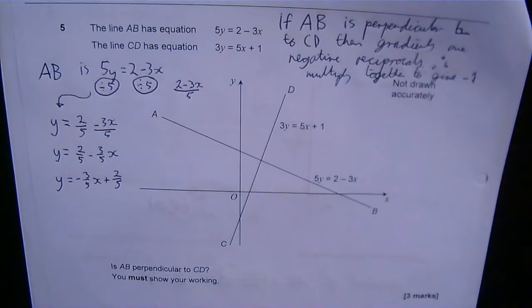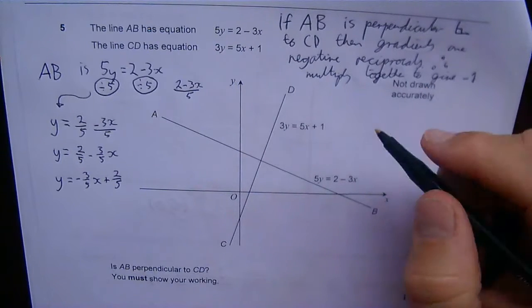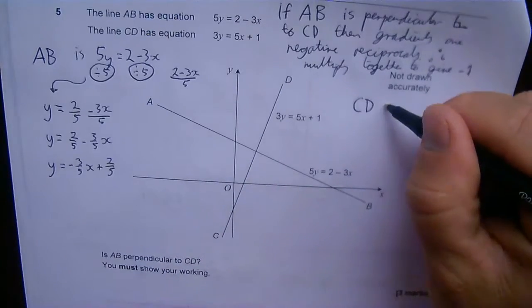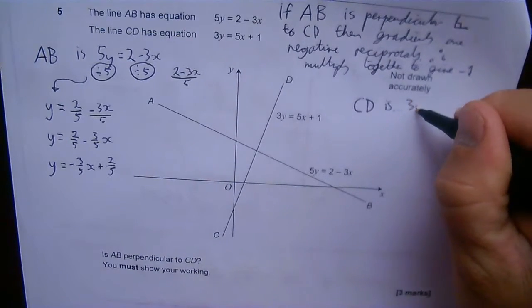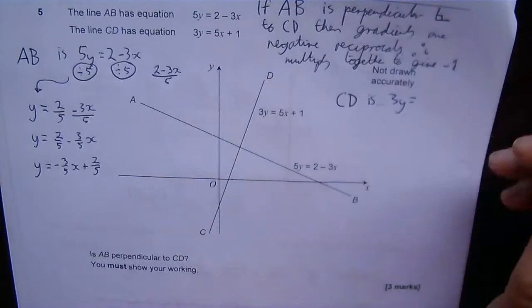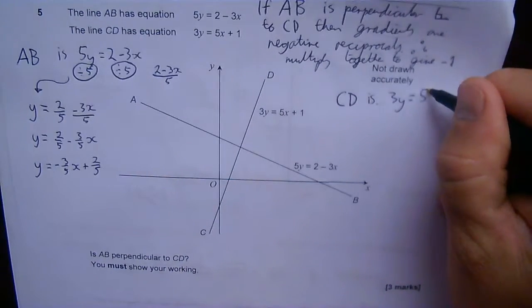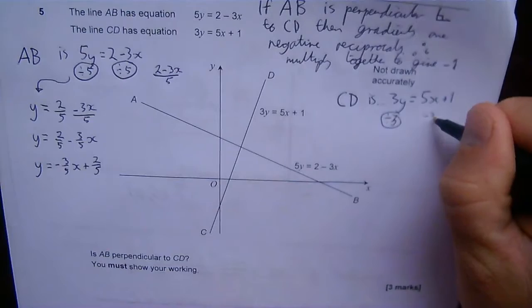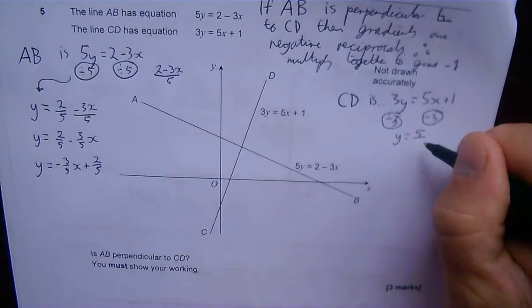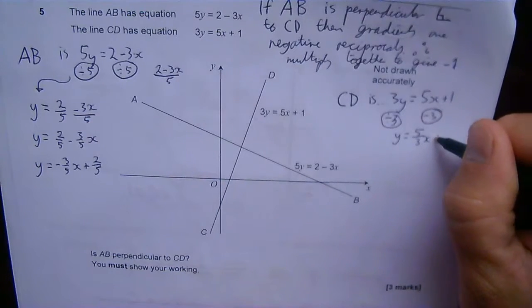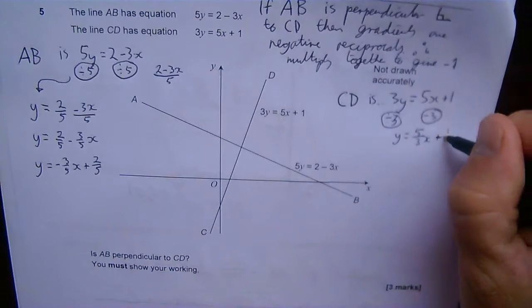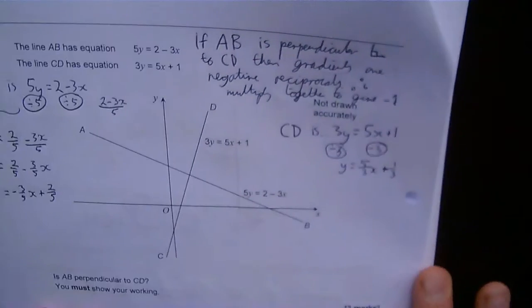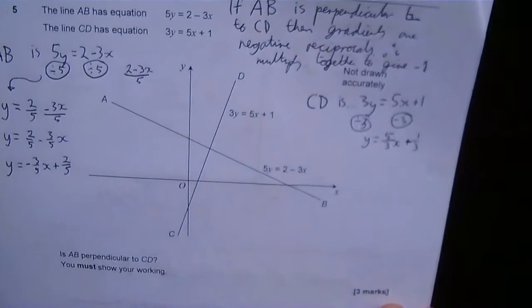Now looking at CD: CD is 3y = 5x + 1. All I need to do is divide by 3 on both sides, so I get y = 5/3 x + 1/3. It doesn't really matter at this point about the y-intercept—the only thing I'm really interested in is the gradients.